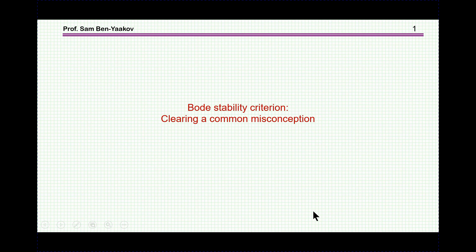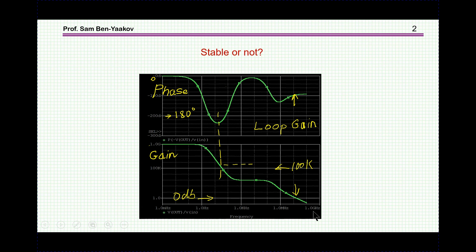Hi, I'm Semben Yaakov. This presentation is entitled 'Bode Stability Criterion: Clearing a Common Misconception.' The issue I'm going to discuss is the case in which we have a loop gain of a system — this is a Bode plot of a loop gain. This is the gain, and this is the phase. We see the gain starting at a high level, going down, and eventually crossing zero dB.